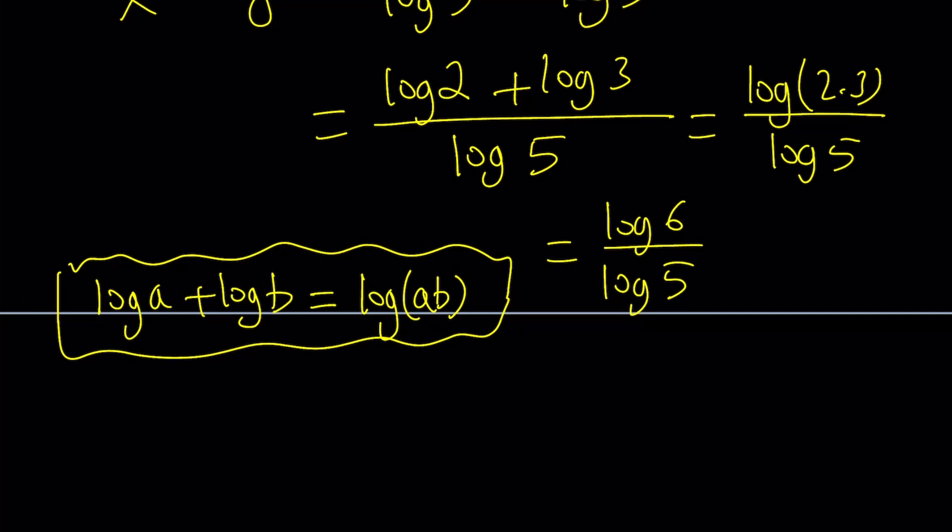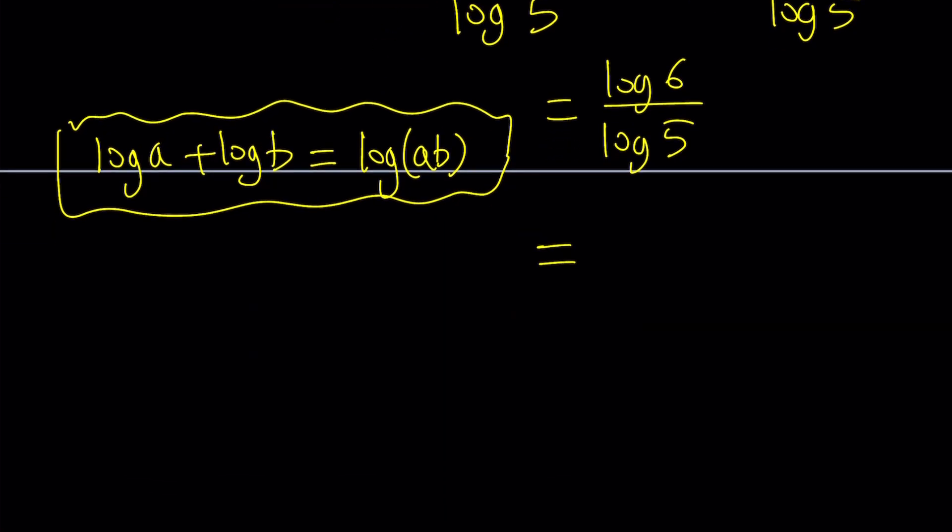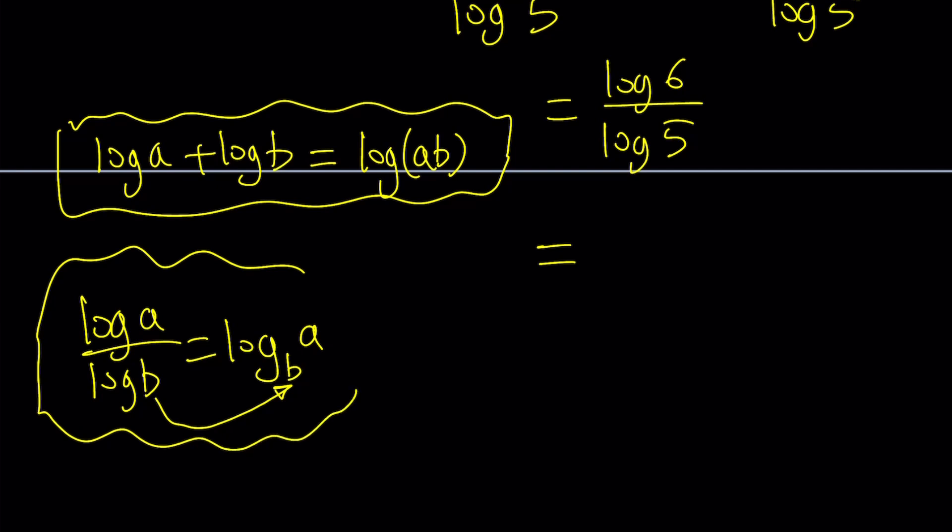Or if you want to write it with a single log you can use what's called change of base formula. If you have log A/log B that can be written as log A with base B. So the base is at the basement at the bottom. That's the change of base and it's a super important property.